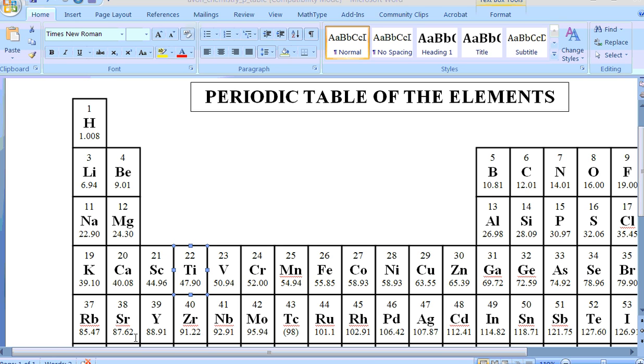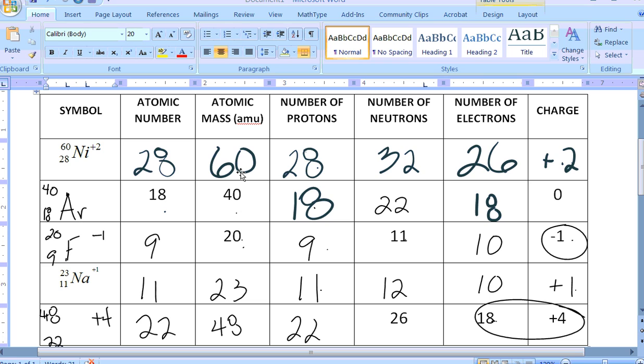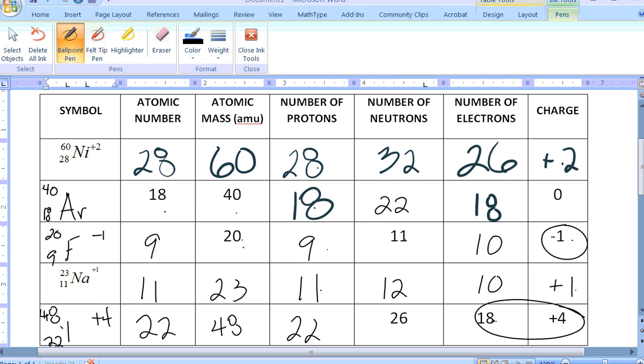You'll notice that the mass on here is 47.90. The 47.90 is the average of all the titanium atoms that exist in the universe or that we know about. We only care about this one that we're trying to get back to. So we know we're looking at titanium TI with a plus 4.